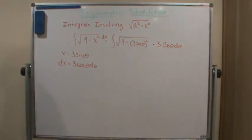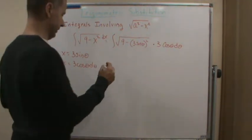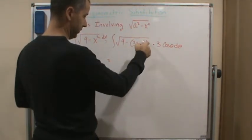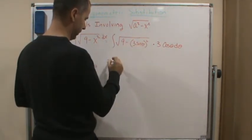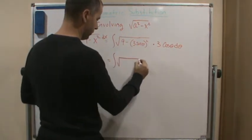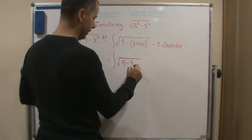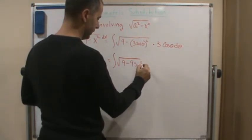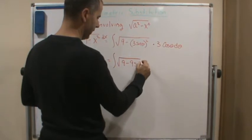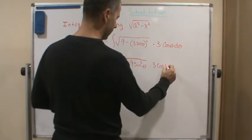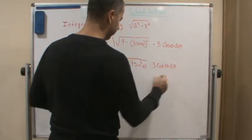So now, looking at that, it still looks complicated. But let's simplify this, so I can distribute the 2 to both of these. So this integral now becomes the square root of 9 minus 9 sine squared theta times 3 cosine theta d theta.